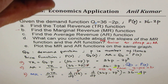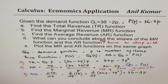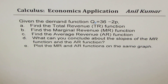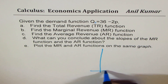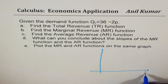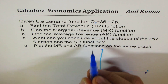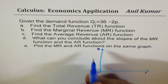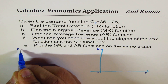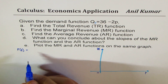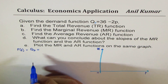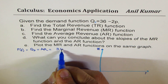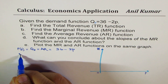Now let's plot MR and AR on the same graph. We put the number of items p along the x-axis, and revenue in dollars along the y-axis. The price function equals the demand function equals average revenue, all equal to 36 minus 2p. Marginal revenue equals 36 minus 4p.